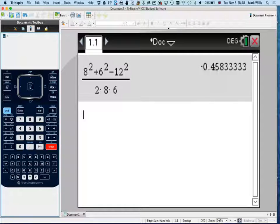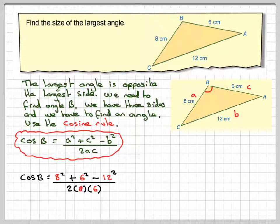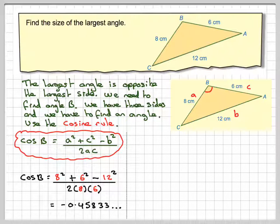Now, don't worry if it's negative, okay, because there's no actual ambiguous case for the cosine rule. So, the angle that you get is the one that you get. So, you're going to get minus 0.45833.